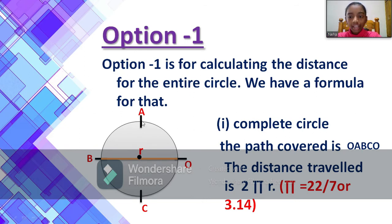Okay, first option is calculating the distance for the entire circle. That means if you have started from point A and reached point O, point C, point B, and again point A, that means you have traveled the whole or the entire circle. And to find the distance or how much distance you have traveled, we use a formula which is 2πr.